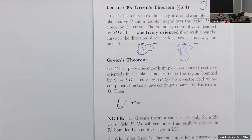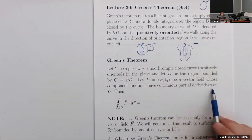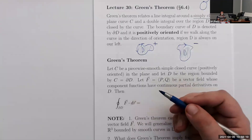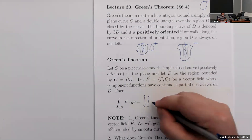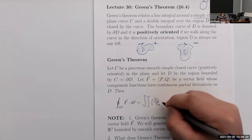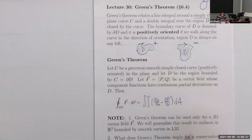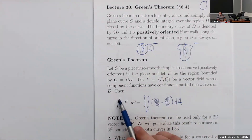Let C be a piecewise smooth, simple closed curve, positively oriented in the plane, and let D be the region bounded by C. Let F be a vector field whose component functions have continuous first partial derivatives on D. Then, since this should be a fundamental theorem of calculus analog, there's a derivative and integral interacting — we get a double integral over D with partial derivatives inside.